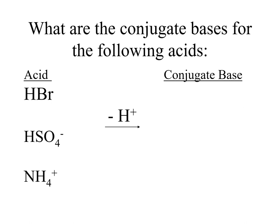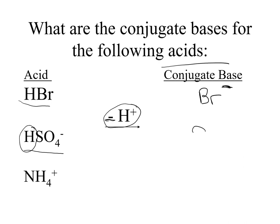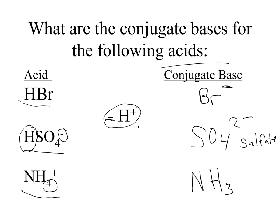Let's do examples determining the conjugate base for given acids. An acid always donates a hydrogen ion — it's what it becomes after it loses hydrogen. If we have HBr and remove one hydrogen, we're left with Br by itself. HBr is neutral; removing the positive H+ makes Br negative — that's bromide. For HSO4-, losing the hydrogen leaves SO4. Starting with a negative one charge and removing a positive makes it two minus — that's sulfate. For ammonium ion NH4+, removing one hydrogen gives NH3. The positive one charge is removed, so it becomes neutral NH3.